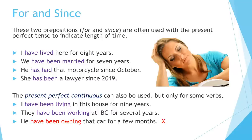For and since — these two prepositions are often used with the present perfect tense to indicate length of time. For example, I have lived here for eight years. We have been married for seven years. He has had that motorcycle since October. She has been a lawyer since 2019. The present perfect continuous tense can also be used, but only for some verbs. For example, I have been living in this house for nine years. They have been working at IBC for several years. We cannot say he has been owning that car for a few months — we do not say owning in the continuous tense.